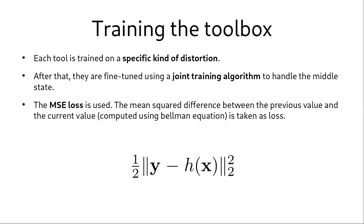So now comes the question, how do we train the algorithm? We must understand that we must train the tools in the toolbox and the decision-making agent separately. Then we perform fine-tuning using a joint training algorithm to make the model more robust. When training the toolbox, each tool is trained on a specific kind of distortion. In RL restore, we have tools for deblurring, denoising and JPEG artifact reduction. Note that the mean squared error is used as the loss function.